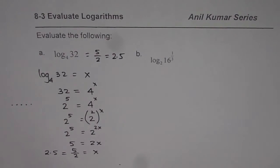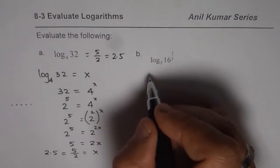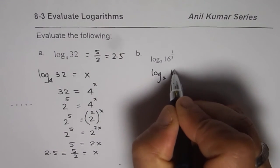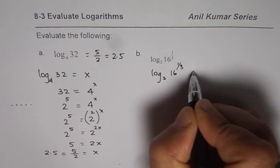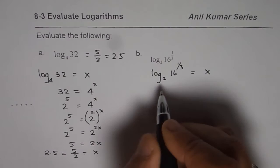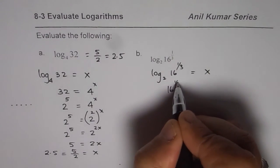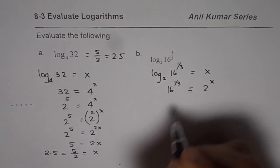Now, let us repeat the steps for the second question, which is log₂(16 to the power of 1 over 3). Let it be equal to x. Then 16 to the power of 1 over 3 is equals to 2 to the power of x.